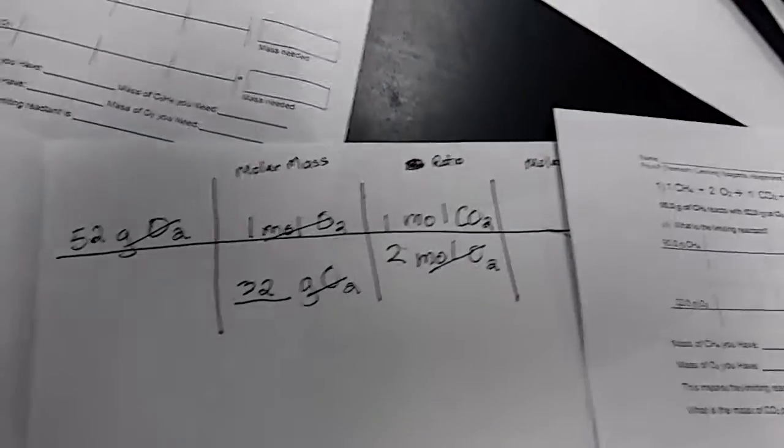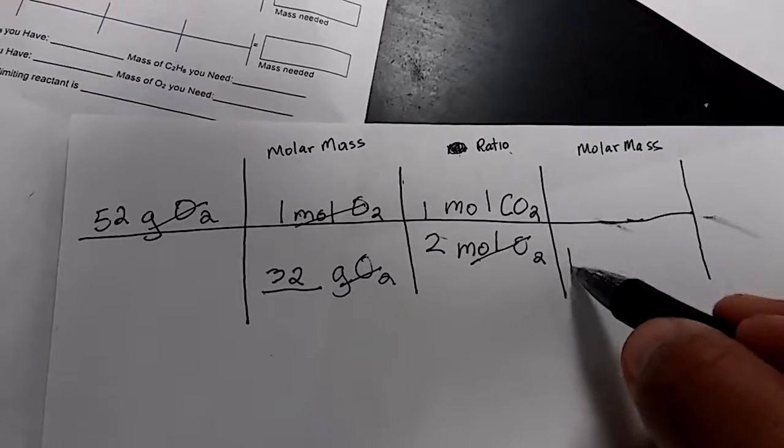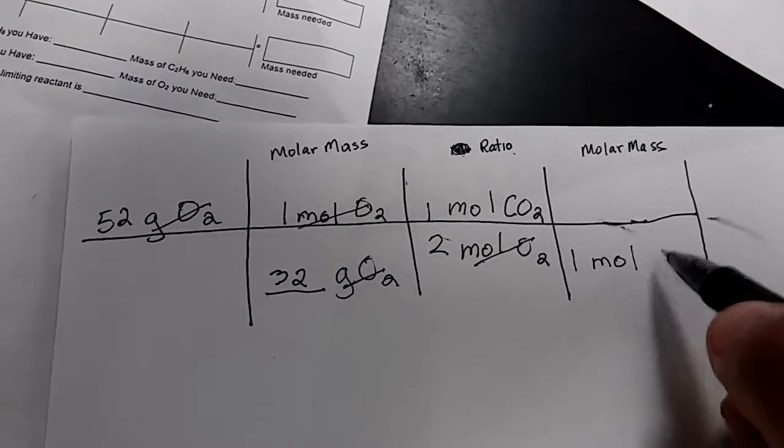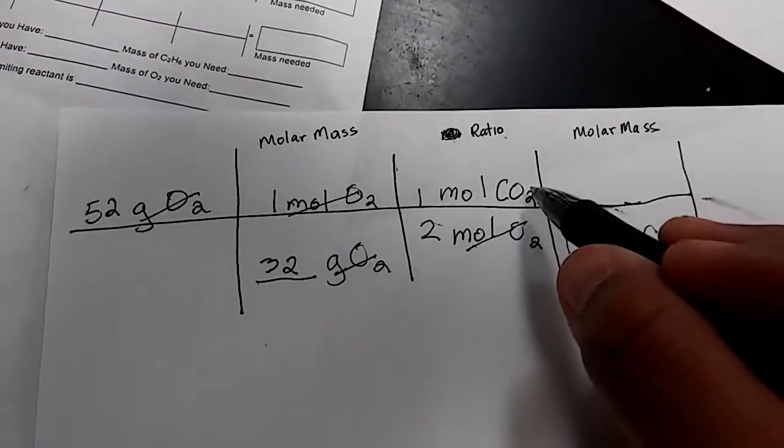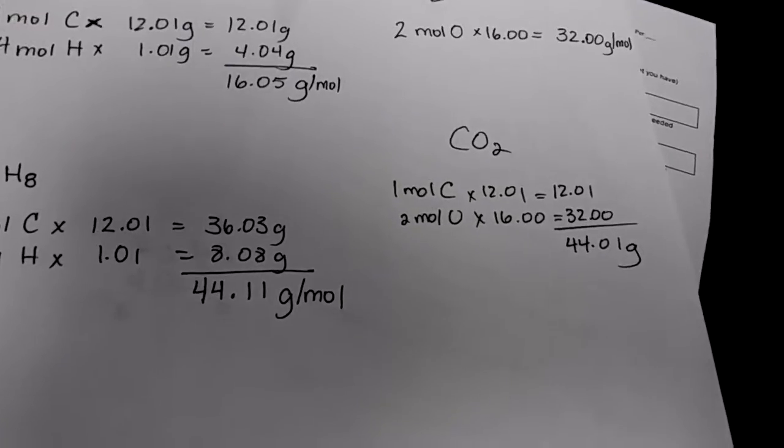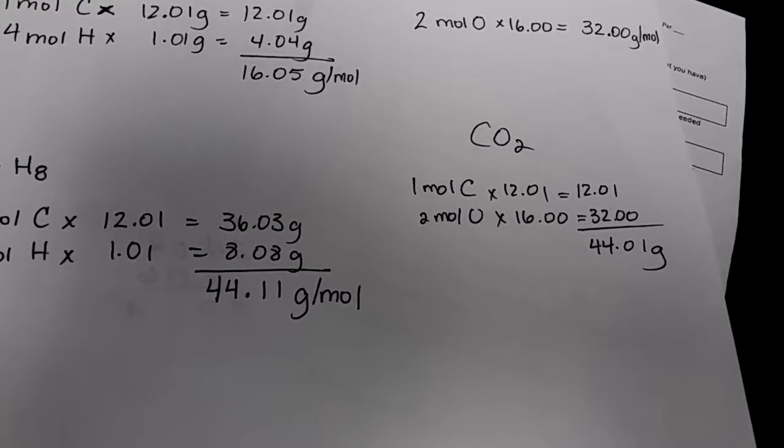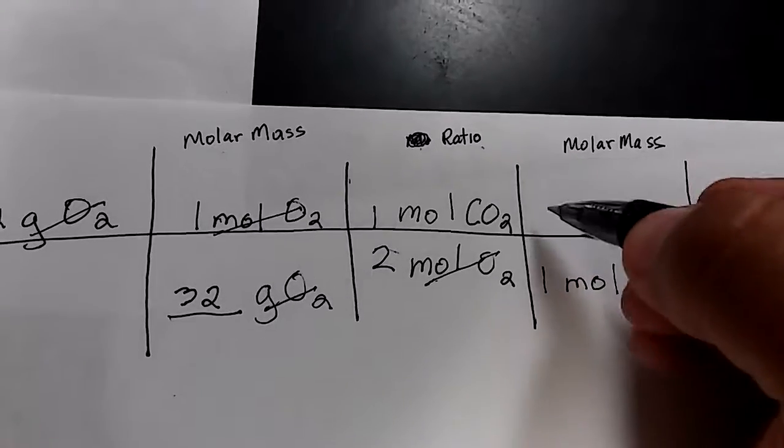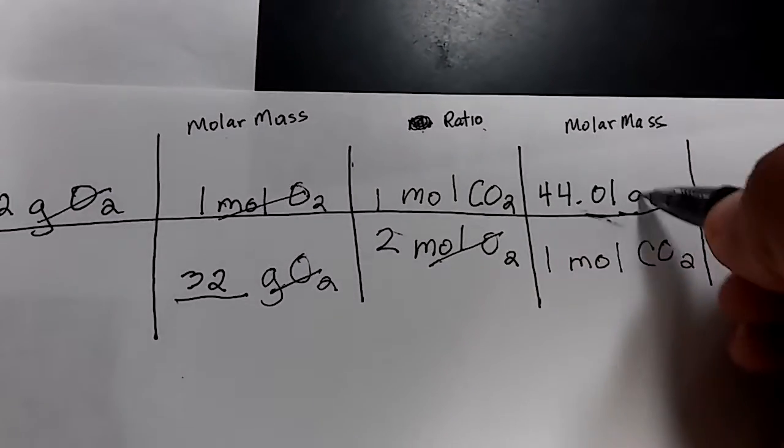Once again, we can cancel like terms. The last step is a molar mass step. So again, this has to cancel diagonally. This has to be one mole of CO2. And right on top is going to be the molar mass of CO2. The molar mass of CO2 is 44.01, as you can see the calculation. Go ahead and place the molar mass up here. So 44.01 grams of CO2.